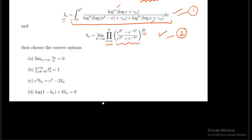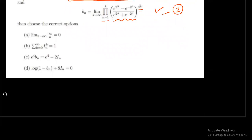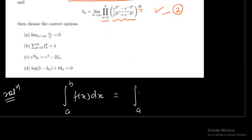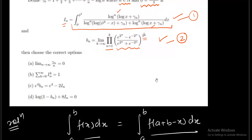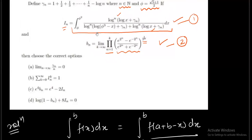Let us start with the first one. As I told you, I am getting a hint of using the property of definite integration which says that the integral from a to b of f(x) dx can be replaced with the integral of f(a+b−x) dx — both will have the same value. I feel that after using this property, the denominator will not change, and in the numerator I will get a useful factor. So what I have to do is replace every x with φ+φ².